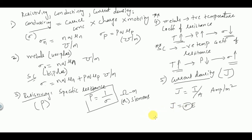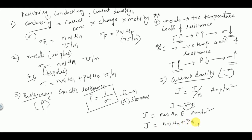In the case of metal, J = nqμ_n · E, with units of ampere per meter square. Similarly, J in the case of a semiconductor is given by J = (nqμ_n + pqμ_p) · E, in ampere per meter square. This covers resistivity, conductivity, and current density.